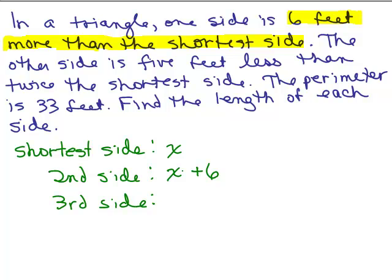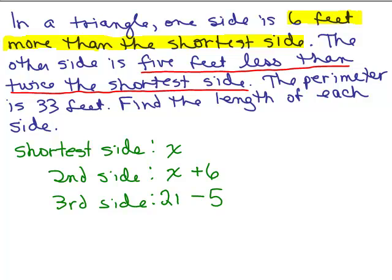Now what about the other side? It says the other side is 5 feet less than twice the shortest side. 5 feet less means you're going to have to subtract 5 from something. 5 feet less than twice the shortest side. Since the shortest side is X, twice that would be 2X.